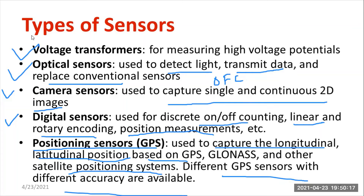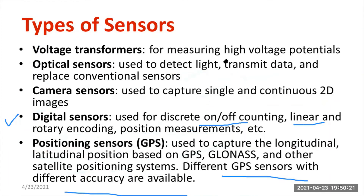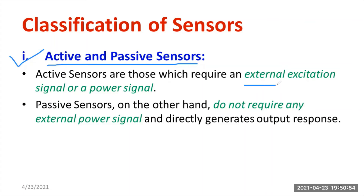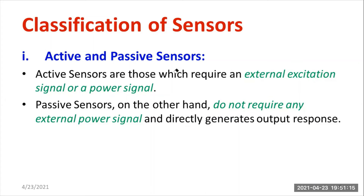We are now familiar with different types of sensors and their importance. How do we classify sensors? The first classification divides sensors into active and passive. Active sensors require external power or external excitation. Passive sensors do not require any external power signal or excitation. This classification depends on whether an external supply or powering unit is needed.